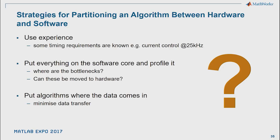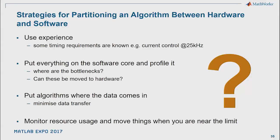Another strategy is to put your algorithms where the data comes in. If sensors and ADCs are piping data directly into the FPGA, it makes sense to process that data at the point of entry, then pass processed data on — minimizing data transfer and avoiding spending processing time pumping data around. Also, continuously monitor resource usage as you evolve your design and move things around when you're near limits. With code generation tools, you can get metrics reports: for C code, static code metrics like RAM, ROM usage, and stack size; for HDL code, resource usage metrics for the implementation.